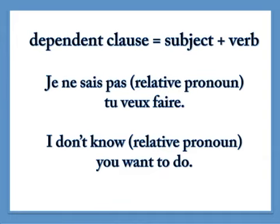Ce qui, ce que, and ce dont are like the relative pronouns qui, que, and dont — meaning they introduce dependent clauses. A dependent clause is one that has a subject and a verb, but it needs to be connected to a main clause to form a complete sentence. Relative pronouns are the words that connect a dependent clause to a main clause.